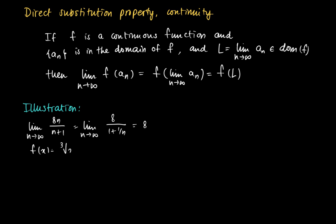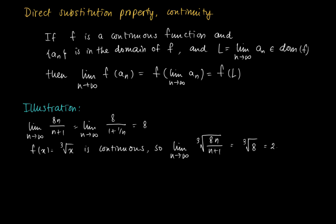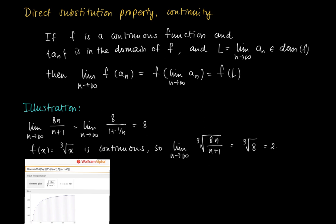Now suppose we look at the following continuous function, which is just a cubic root. The cubic root is a continuous function, and we may calculate the limit of the cubic root of our sequence aₙ—the cubic root of 8n/(n+1)—simply by plugging in the limiting behavior of 8n/(n+1), which is just the cubic root of 8 equals 2.